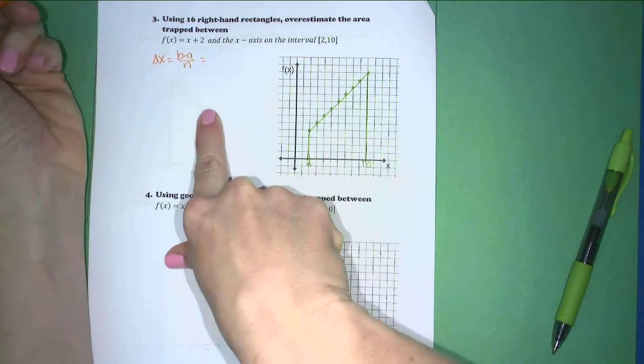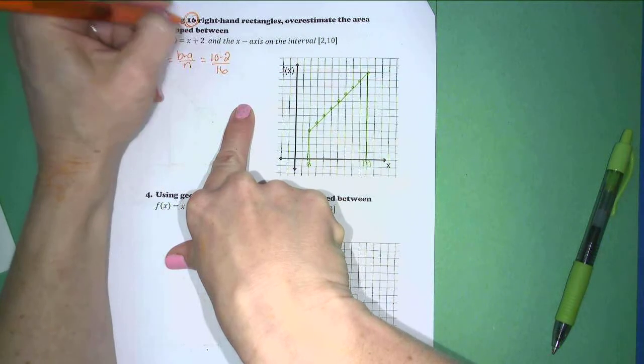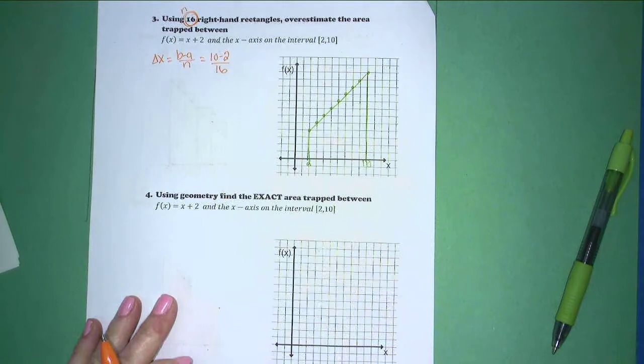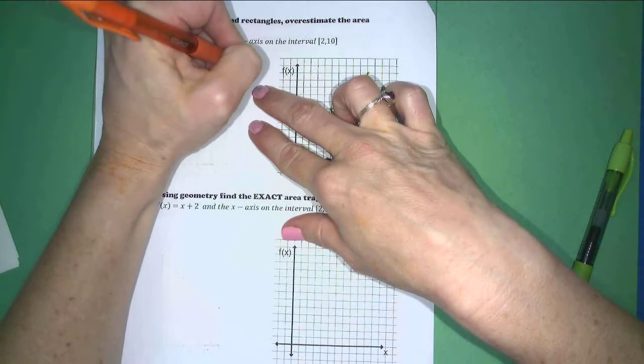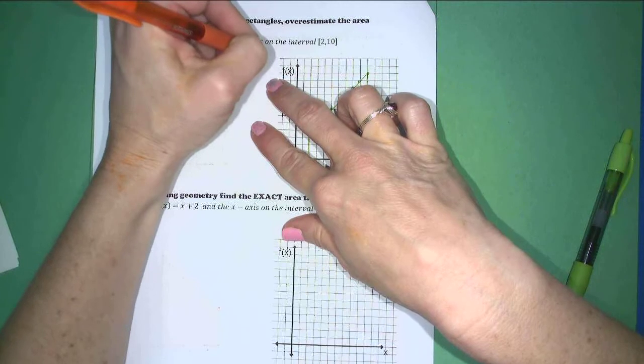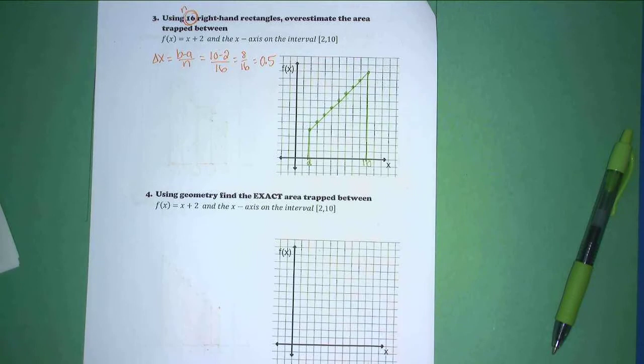10 minus 2 divided by 16. n is 16 in this example, which is going to give us 8 sixteenths, or a half, or intervals of 0.5 units in length.